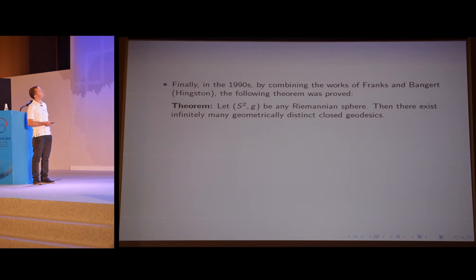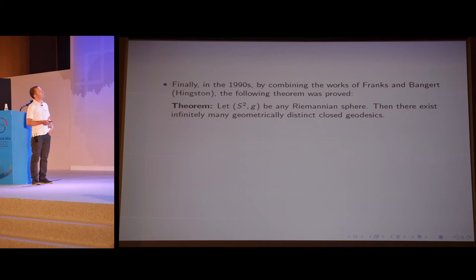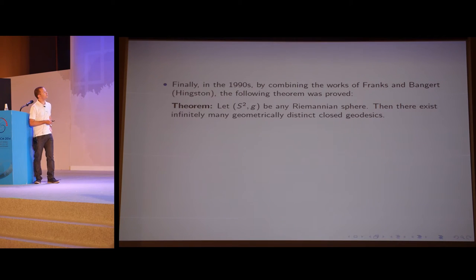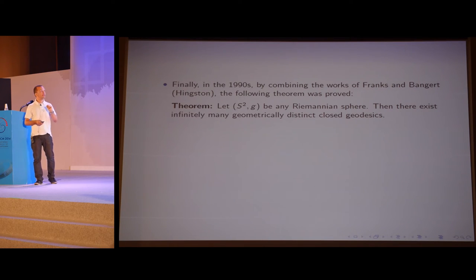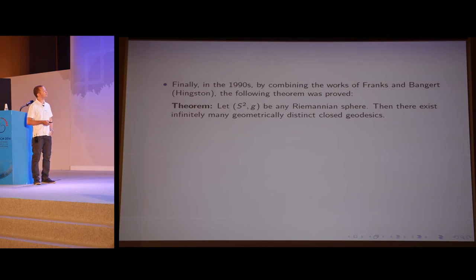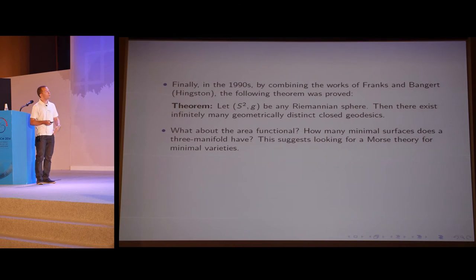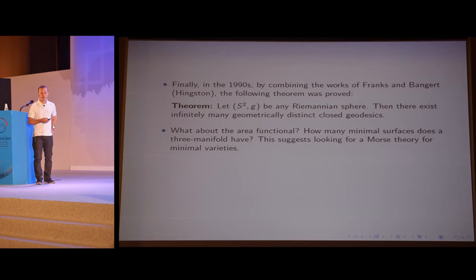In the 1990s, by combining the works of Franks and Bangert — and Nancy Hingston, who gave a beautiful lecture here at this Congress, also proved some quantitative results — one gets the theorem that any Riemannian sphere contains infinitely many geometrically distinct closed geodesics. The proof combines ideas from dynamics and calculus of variations. The question we are more interested in is: what about the area function? What can we do in higher dimensions? In particular, how many minimal surfaces does a three-manifold have?